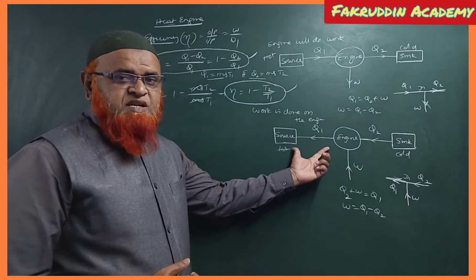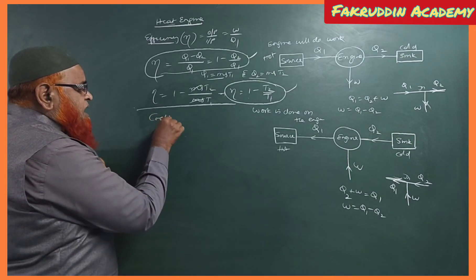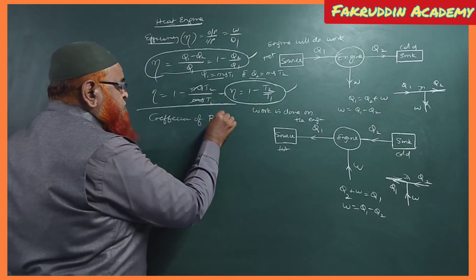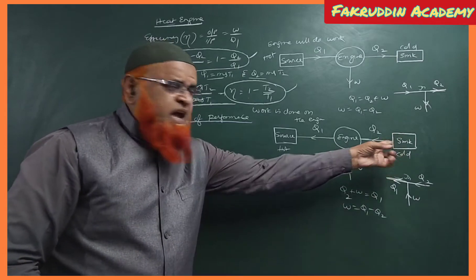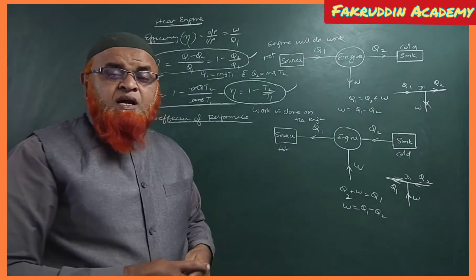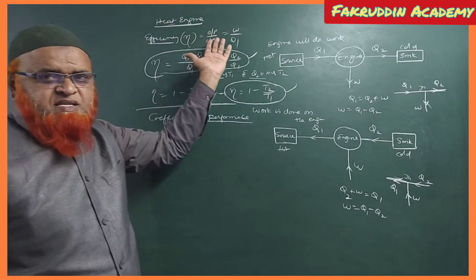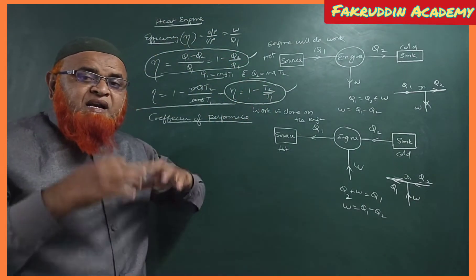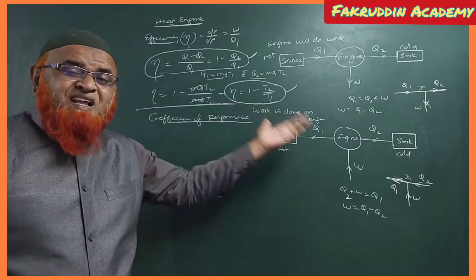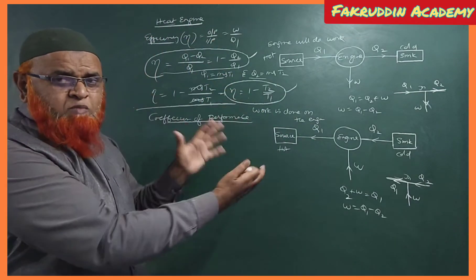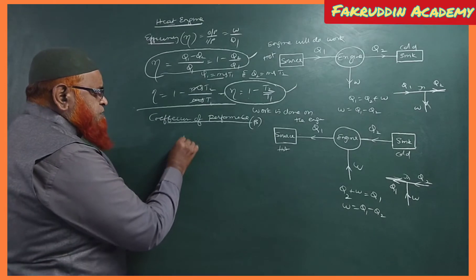Now let us discuss the refrigerator. In the refrigerator, we find the coefficient of performance, denoted by beta (β). Work is done on the engine, the engine absorbs heat from the sink and sends it to the source. Taking the example of a split AC: the indoor unit absorbs heat from the room (cold reservoir) and the outdoor unit sends heat outside (hot reservoir).